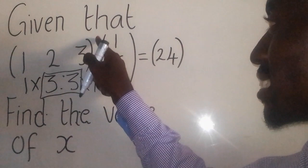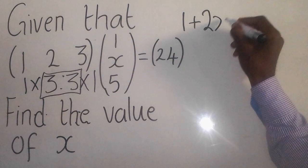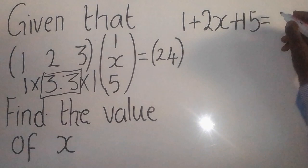One times one gives me one. Plus two times x gives me 2x. Plus three times five gives me 15. Equal to 24.